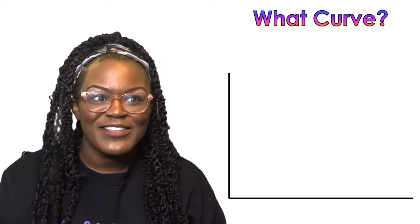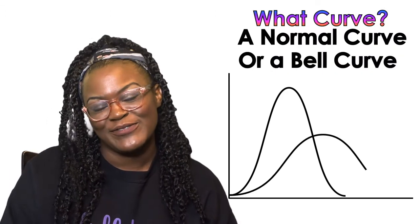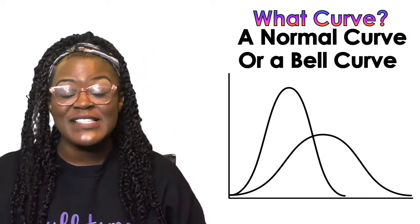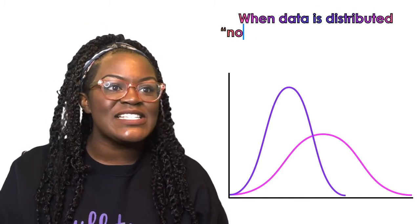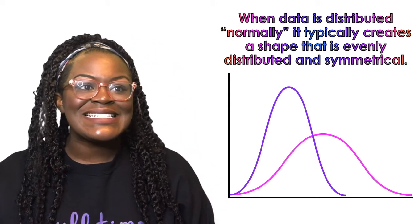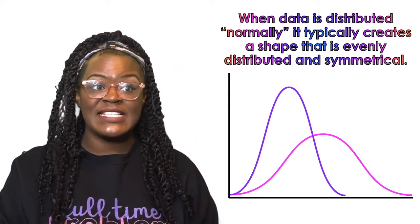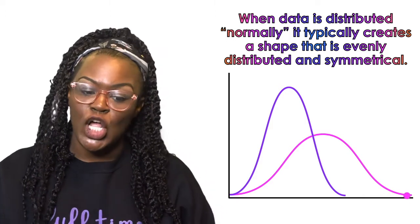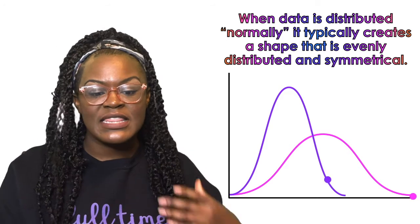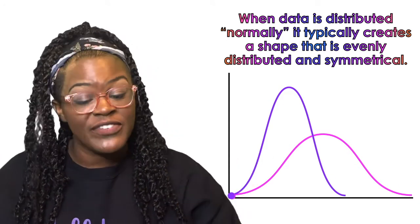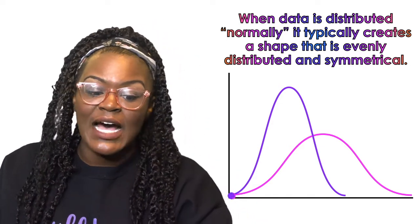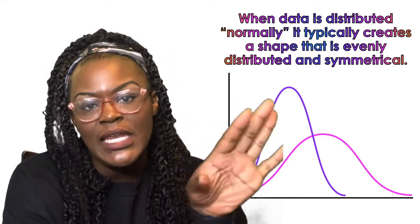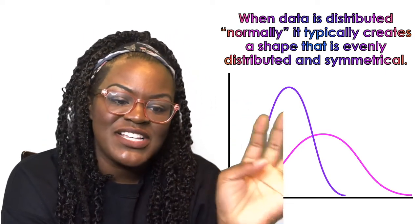First of all, what curve? Well, the normal curve, or bell curve — they're the same thing. We see these a lot in statistics. When data is normally distributed, it typically creates a shape that is evenly distributed and symmetrical. Sometimes data might not be perfectly even, but for the most part it will be. Normal distributions have the same mean, median, and mode. So that's just a fun fact.